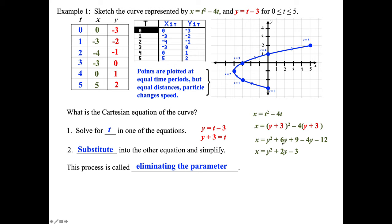Our parameter was t. This makes sense — it would be very difficult to graph in the calculator because it doesn't pass the vertical line test, and our calculator can only graph functions.